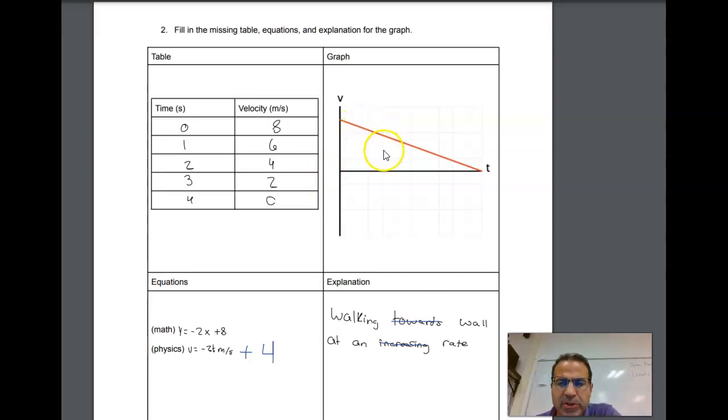Now the question is, are you moving away from the wall or towards the wall? All these numbers are positive. What is positive velocity? Positive velocity means that the position is increasing. Negative velocity means your position is decreasing.